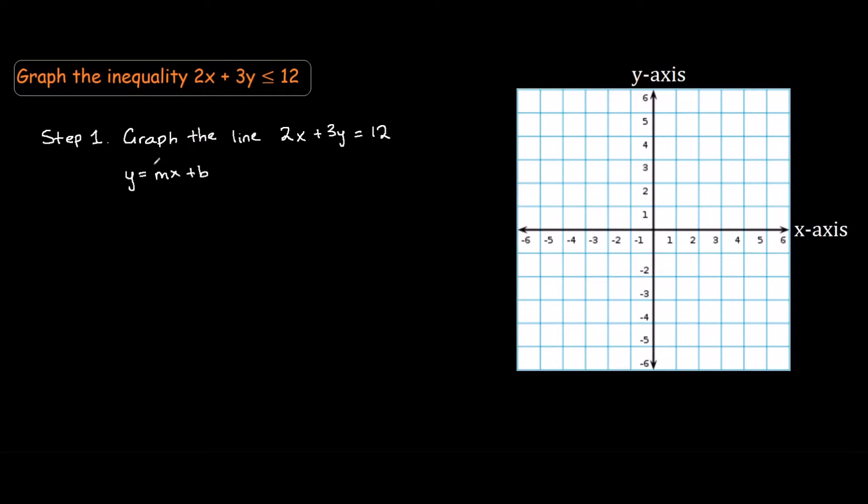I'll be using the y equals mx plus b method. So we have 3y equals negative 2x plus 12, which gives us y equals negative 2 thirds x plus 4.